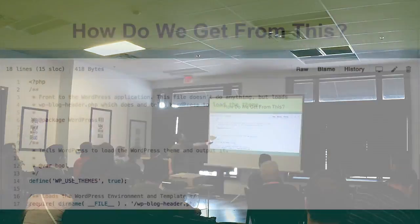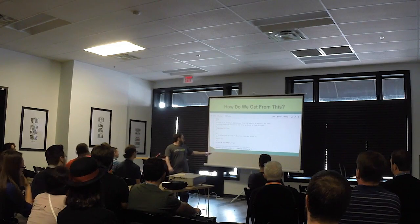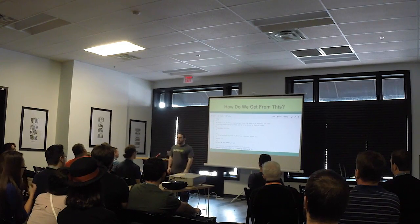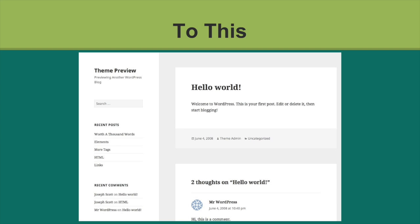Our question today is: how do we get from this — no matter what you type into a front-end request from WordPress, this is where it starts. This is index.php. We have two lines of executable code: to find whether or not we're using themes, require the blog header. That's it. This is where it all starts.